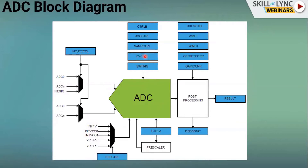The ADC control registers include the average control register, sampling control register, and event control register. These control one-shot vs. continuous mode, event-based triggers, and averaging. Post-processing is built into the ADC hardware and includes gain correction, offset correction, and window mode monitoring — filtering values outside the low and high threshold range.